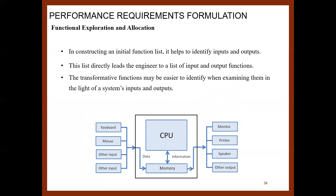In constructing an initial function list, it helps to identify inputs and outputs, which directly leads the engineer to a list of input and output functions. The transformative functions may be easier to identify when examining them in the context of a system's inputs and outputs. For example, a computer has input devices like a keyboard and mouse, outputs like a monitor or printer, and the computer transforms those input actions into the final output — such as a completed assignment.